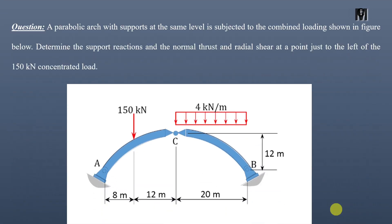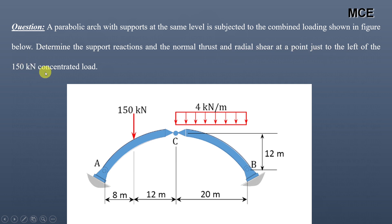Hello and welcome back to the Master's Wheel Engineering. In the previous video we learned how to find the support reactions and draw the bending moment diagram for a parabolic three-hinged arch. In this video you will learn how to find the normal thrust and radial shear for a parabolic three-hinged arch. The given question states that a parabolic arch with supports at the same level is subjected to a combined loading, and we have to find the support reactions, normal thrust, and radial shear at a point just to the left of the 150 kN concentrated load.